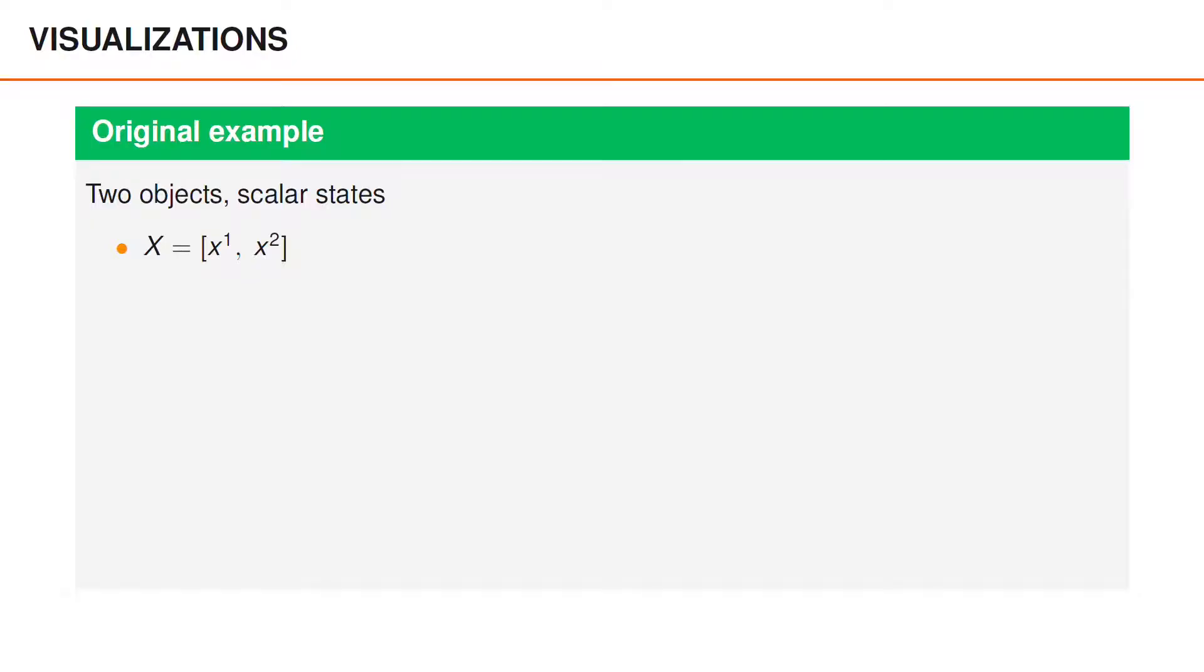We can illustrate the GNN filter using a 1D example that is similar to the 1D examples we have looked at before.